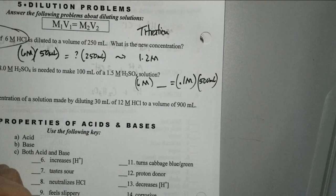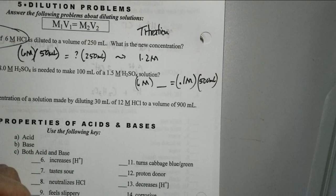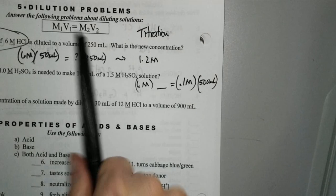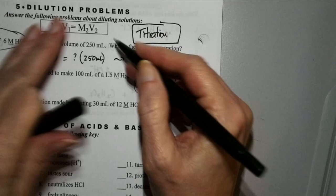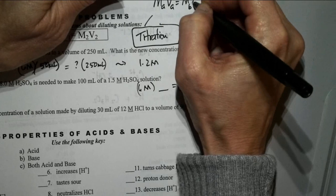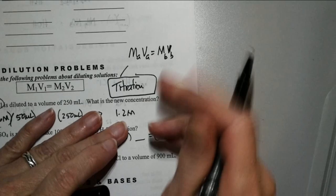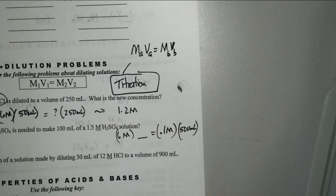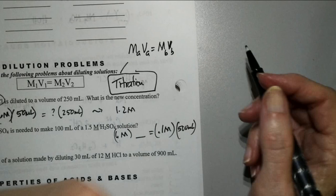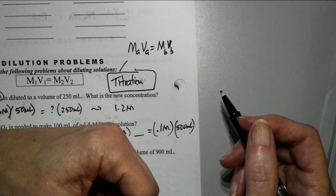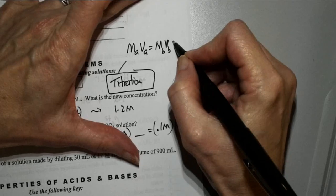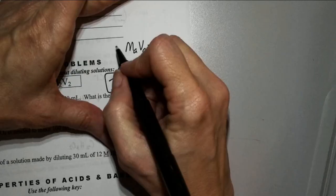The other thing we use this for is titration — not just diluting, but where we have a reaction: MA × VA = MB × VB. What you might have to incorporate is the mole ratio. If it's a one-to-one ratio like HCl to NaOH, you're good. But if you use H₂SO₄ and NaOH, you're going to use up two hydrogen ions for every one mole of sodium hydroxide, so you may have to modify it by putting N (number of moles) on one side or the other. Just watch your mole ratio.